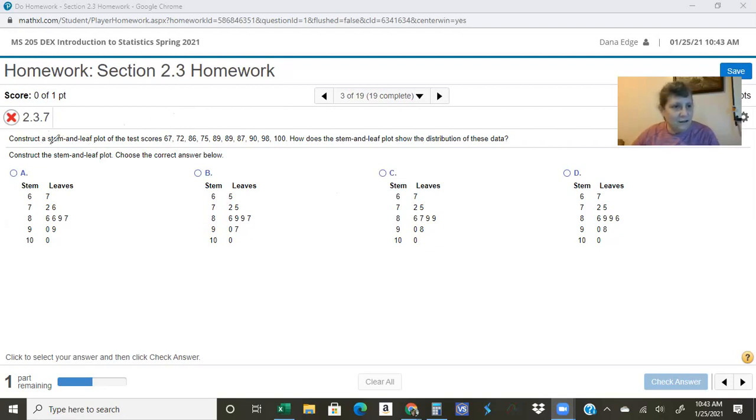This one says construct a stem and leaf plot of the test scores 67, 72, 86, 75, 89, 89, 87, 90, 98, and 100.